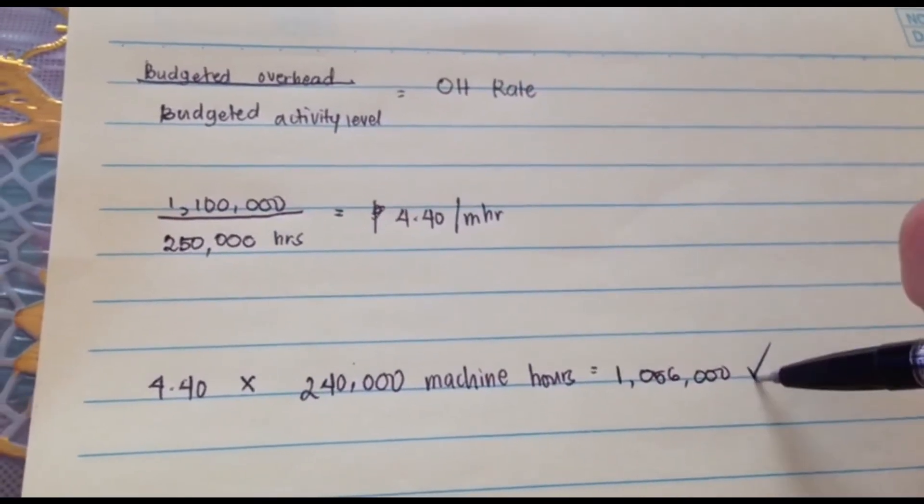And then lastly, we can get the under or overapplied overhead by the difference between the actual overhead and the applied overhead. If the result is positive, then you have underapplied your overhead, meaning the actual amount you spent is greater than what you applied. If overapplied, it means what you applied is greater than what actually occurred, meaning you applied too much overhead compared to the costs actually incurred.